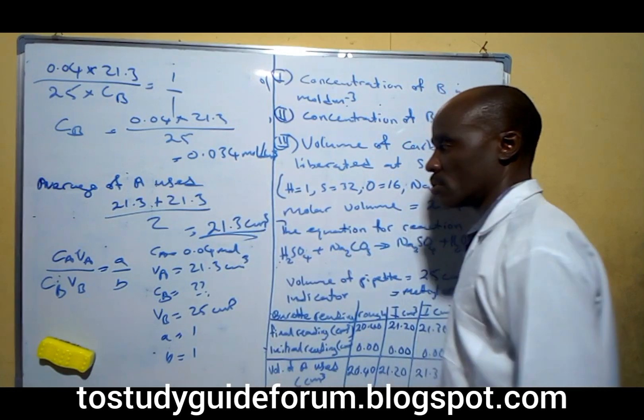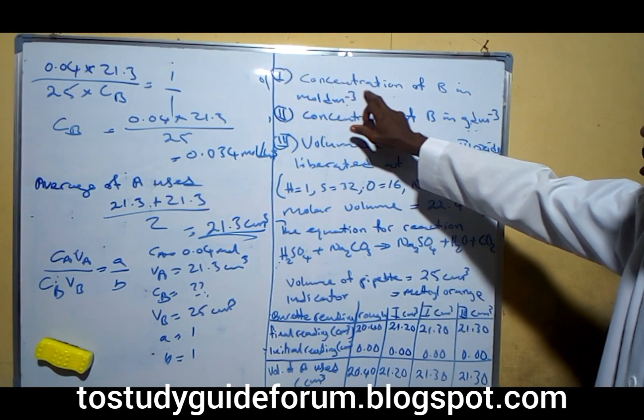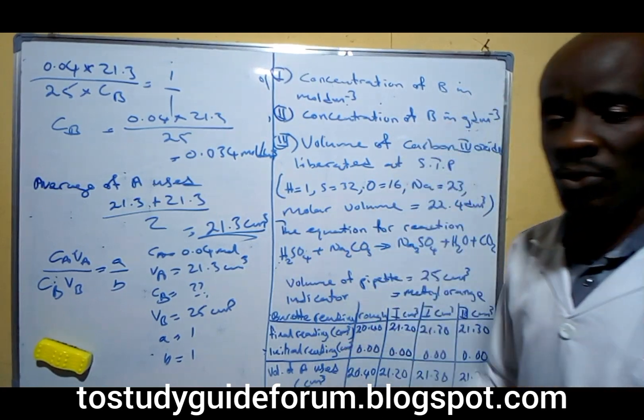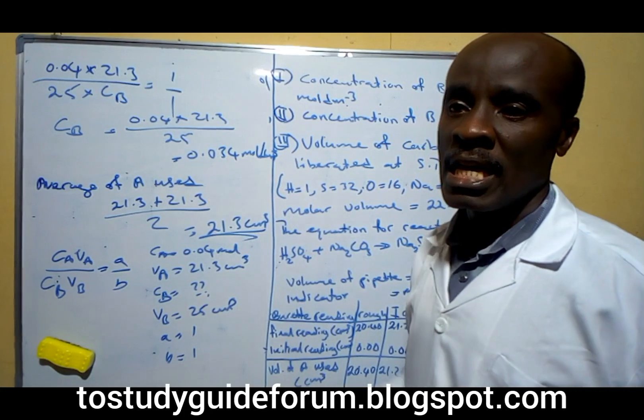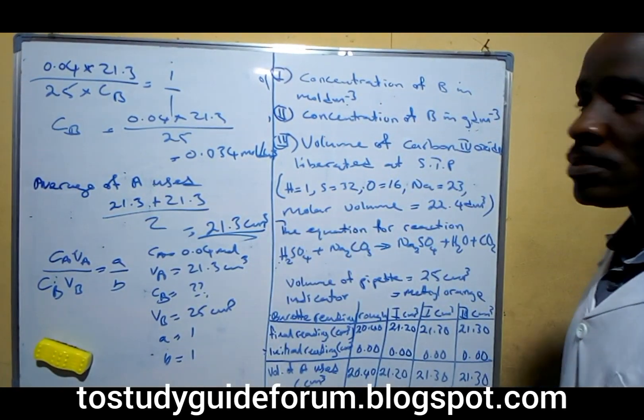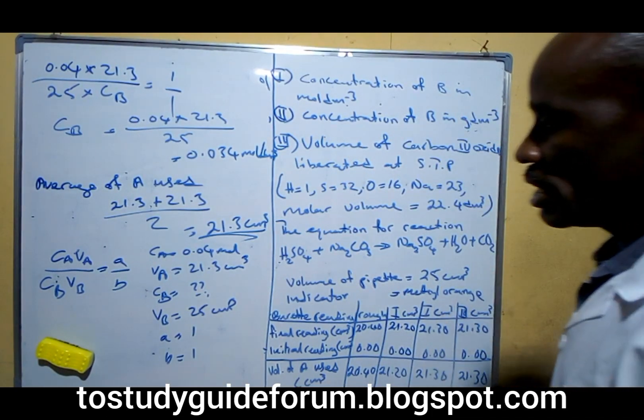What we have here will be 0.034 moles per dm³. This is what we've succeeded in getting, the concentration of B in moles per dm³. That is 0.034 moles per dm³. We'll go over to the next question: concentration of B in grams per dm³.